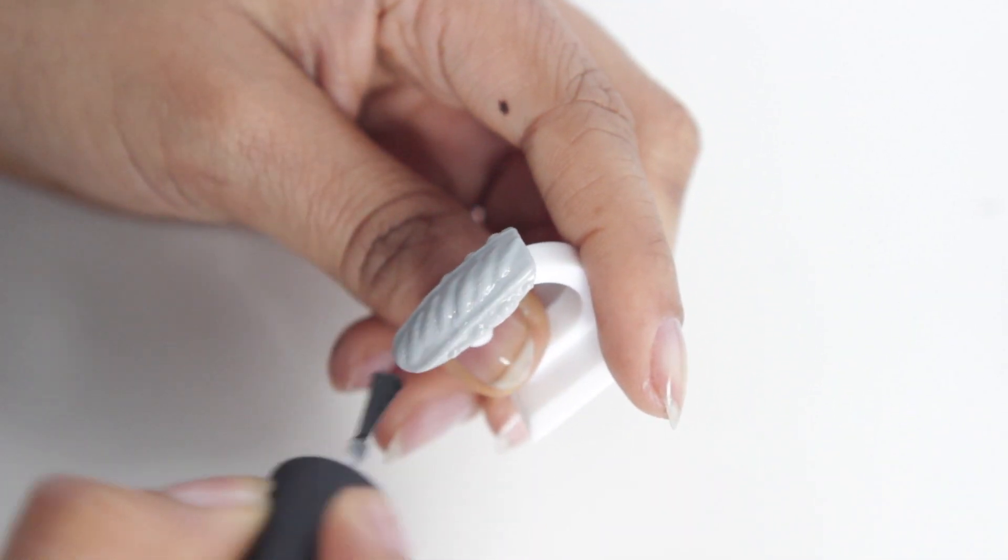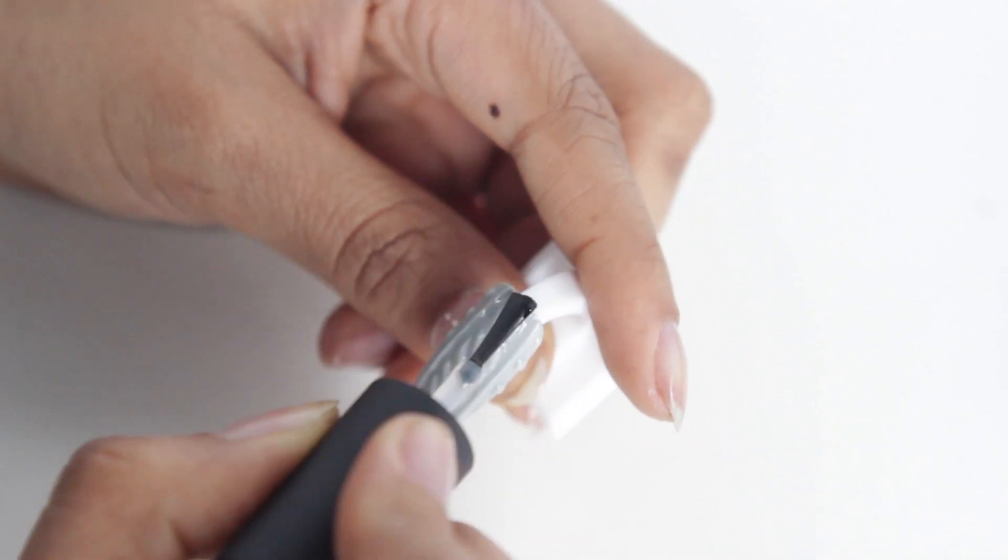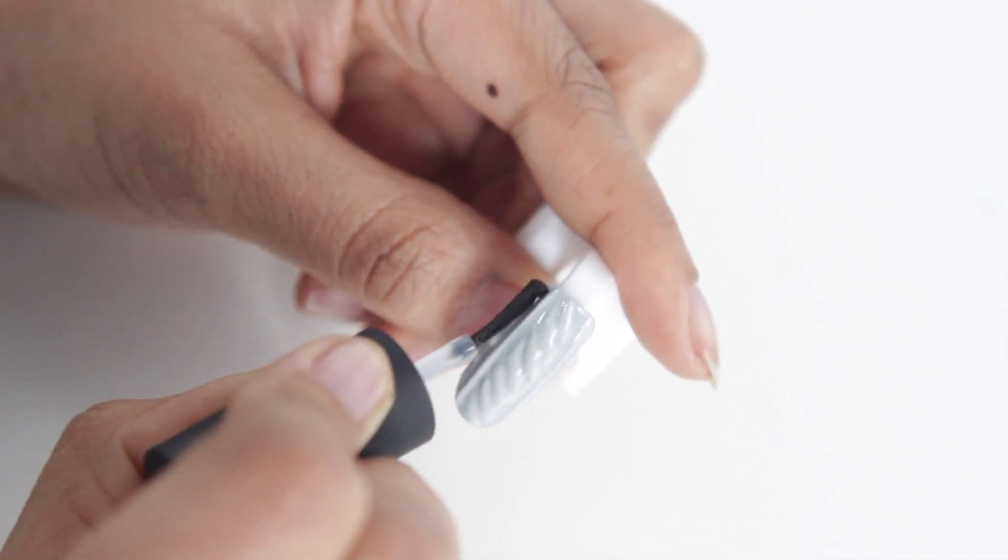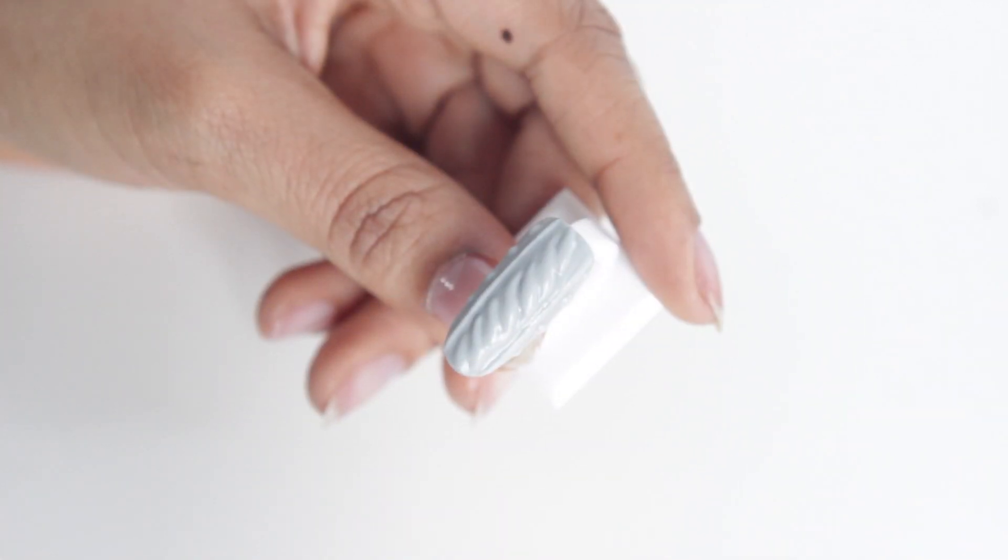And then I actually took regular matte nail polish, and I'm just going to apply this over top. Remember guys, you can use regular nail polish on top of your gel polish. You just want to make sure that when you go to take it off, that you use a non-acetone remover.